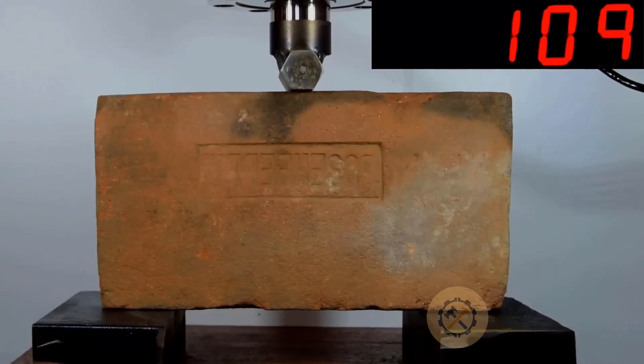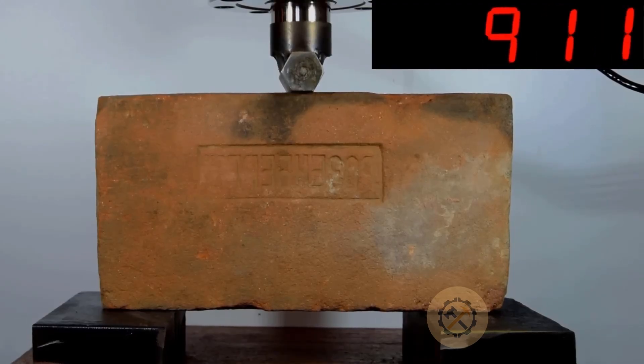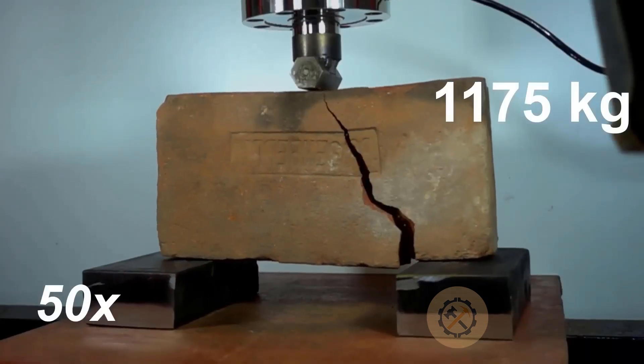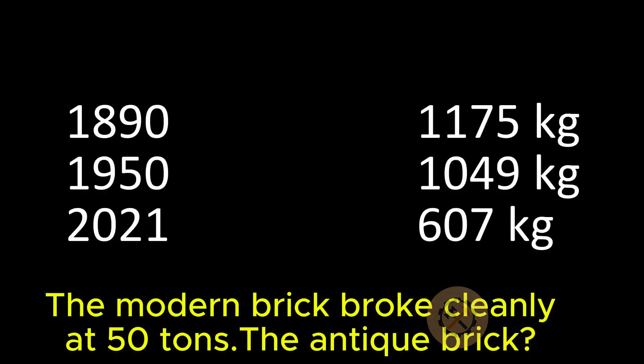First, the modern brick. It looks sharp, smooth, and uniform. As pressure builds, we see fine cracks appear. Then, a sudden collapse at around 50 tons. It breaks cleanly and predictably, just as expected.